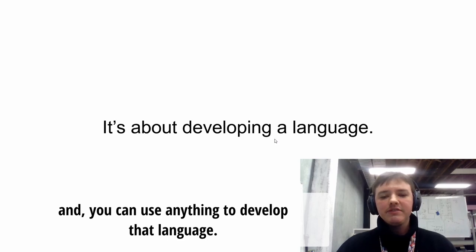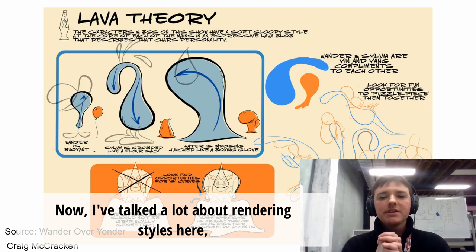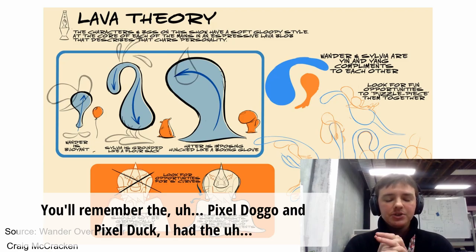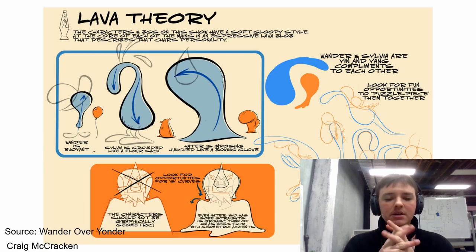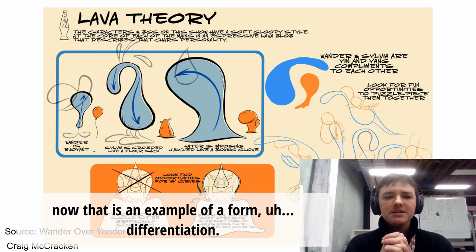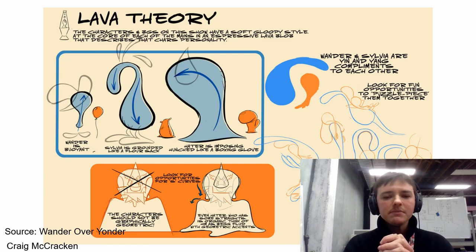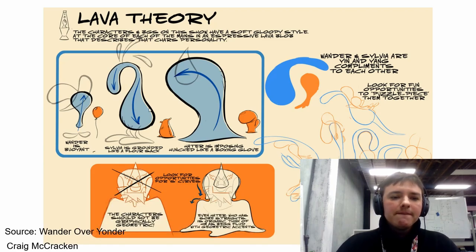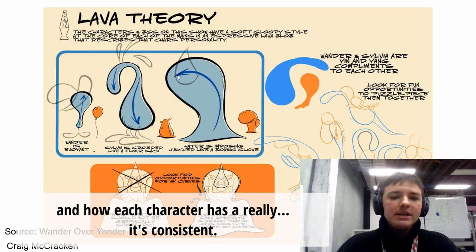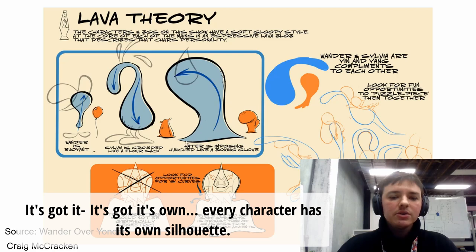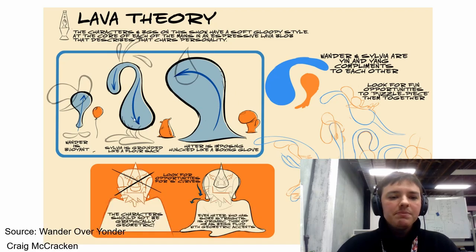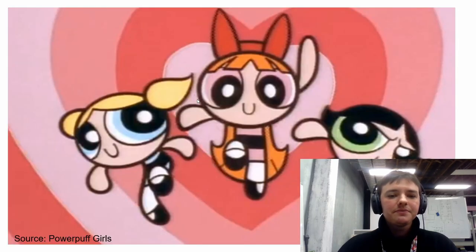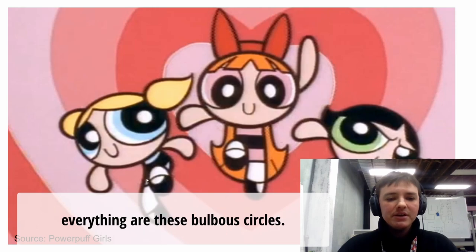I've talked a lot about rendering styles but not much about form — the two are closely interrelated. Craig McCracken is a master at this. You can see how he's developed an established language where each character has its own silhouette but shares consistent arcs that allow us to intimately understand how the characters are formed. The same thing happens with the Powerpuff Girls — everything uses these bulbous circles as a foundational form language.